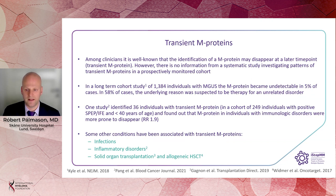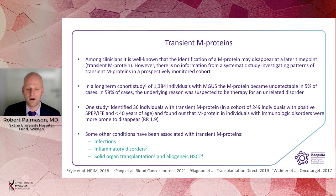Among clinicians, it's well known that the identification of an M protein may disappear at a later time point, which we call a transient M protein. However, there is no information from a systematic study investigating patterns of transient M proteins in a prospectively monitored cohort. In one long-term follow-up study of nearly 1,400 individuals with MGUS, the M protein became undetectable in 5% of cases, and in most of these cases it was suspected to be due to therapy for an unrelated disorder. Another study identified 36 individuals with transient M protein and observed increased prevalence of immunological disorders. We know of conditions associated with transient M proteins, such as post-infectious and inflammatory disorders, and we sometimes observe these transient M proteins after solid organ and hematopoietic stem cell transplantation.